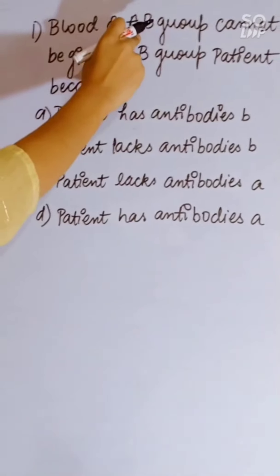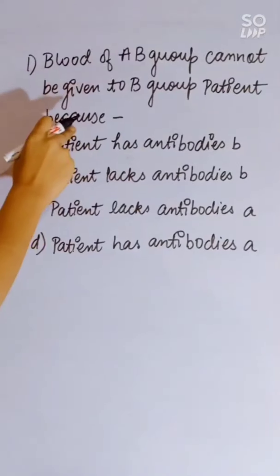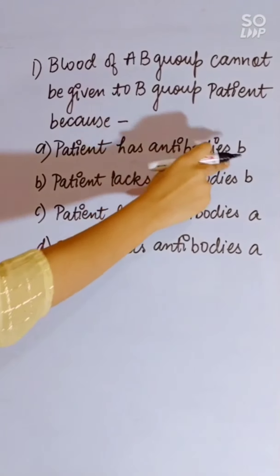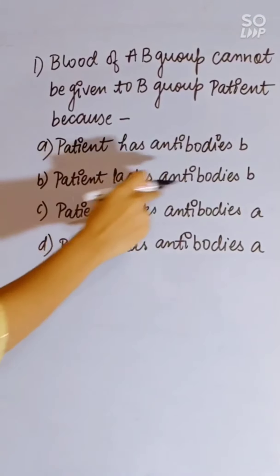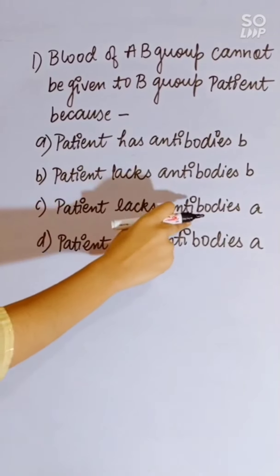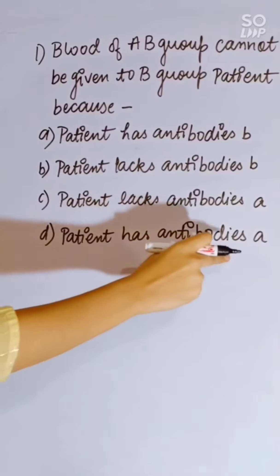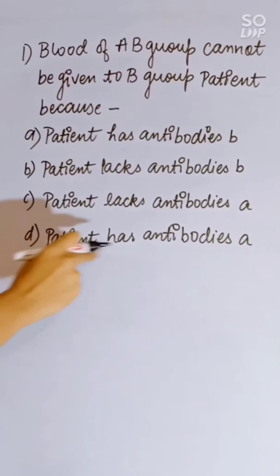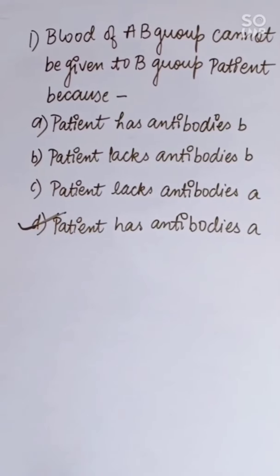Blood of AB group cannot be given to a B group patient because: patient has antibody B, patient lacks antibody B, patient lacks antibody A, or patient has antibody A. Correct answer is D — the patient has antibody A.